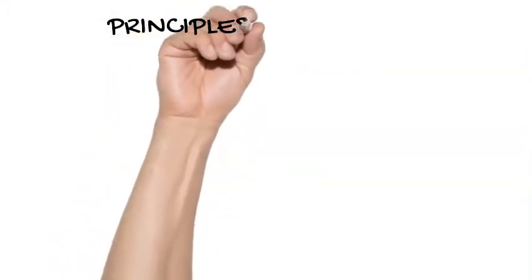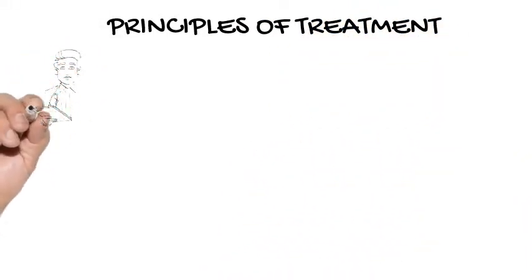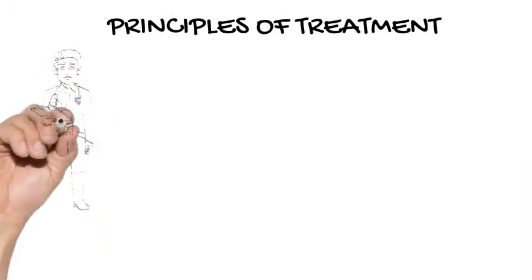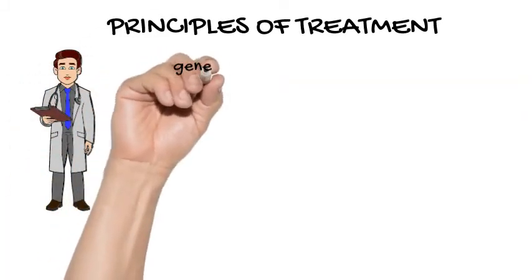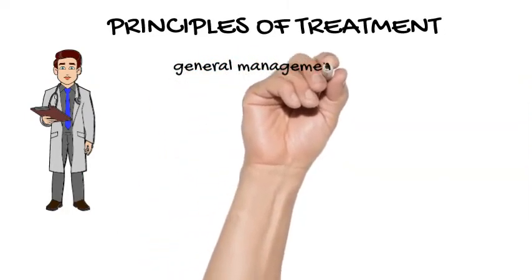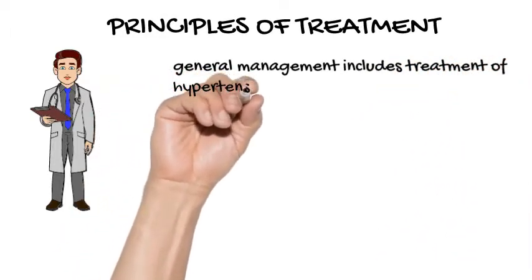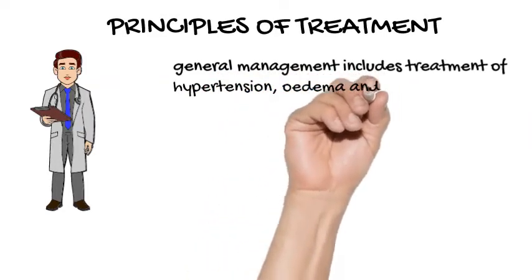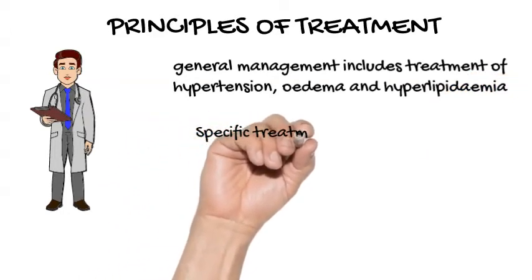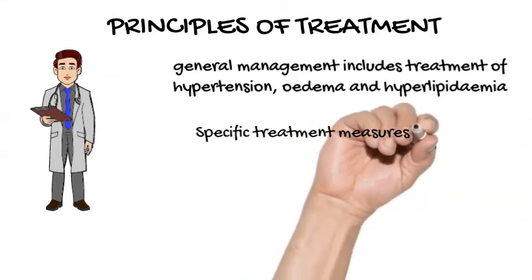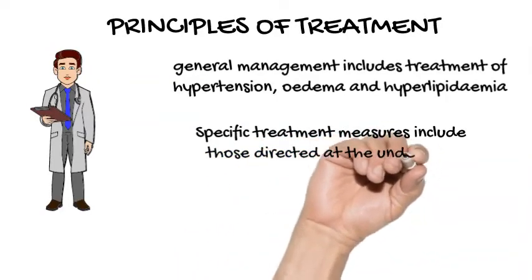Principles of Treatment. The management of GN is often targeted at treating several phases of the condition. General management includes treatment of hypertension, edema, and hyperlipidemia. Specific treatment measures include those directed at the underlying pathology, as well as those directed at retardation of progression of renal failure. The glomerular pathology can be considered as progressing in two phases. The acute or early phase is referred to as the immunological phase, in which antibodies, immune complexes, and cytokine-mediated mechanisms initiate glomerular injury. These immune-mediated mechanisms can be ameliorated by immunosuppressive drugs.